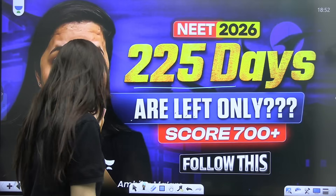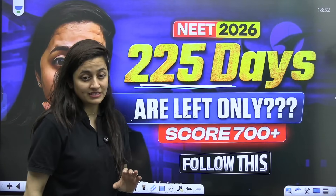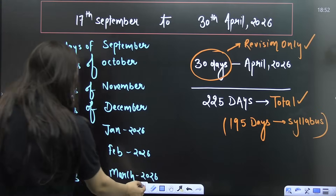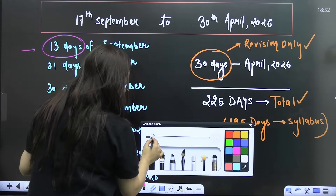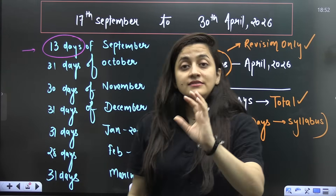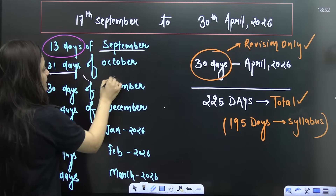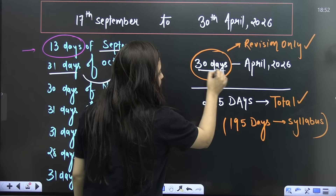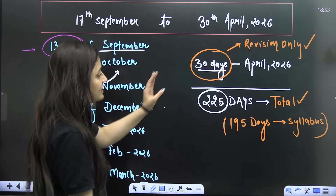Make sure you watch this video till the end and subscribe to our channel. As you can clearly see here, it says 225 days — and trust me, in reality you guys are just having 225 days only. We have 13 days of September remaining, 31 days of October, and overall till 30th of April we just have 225 days.